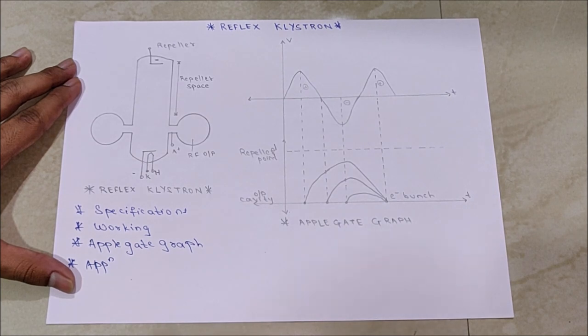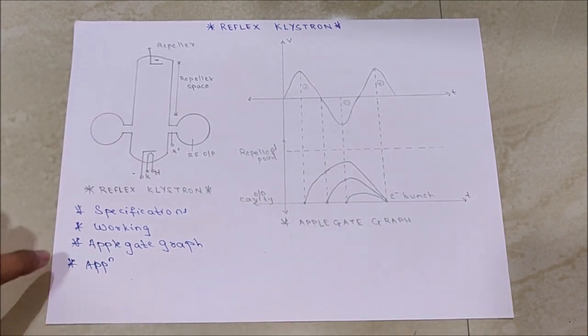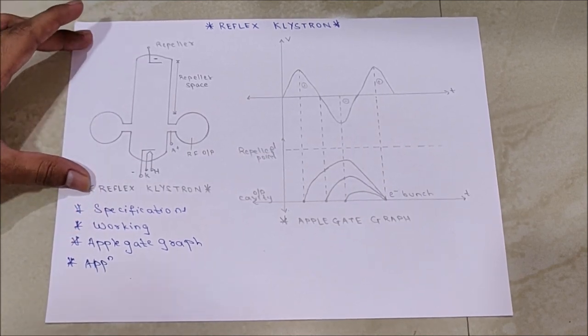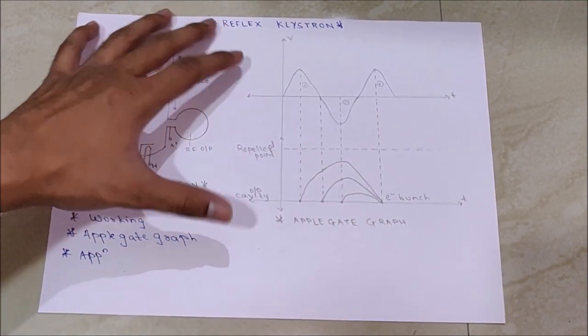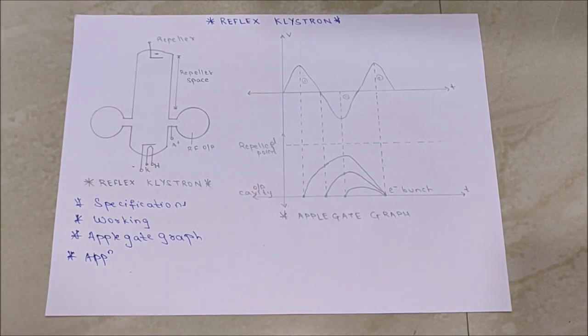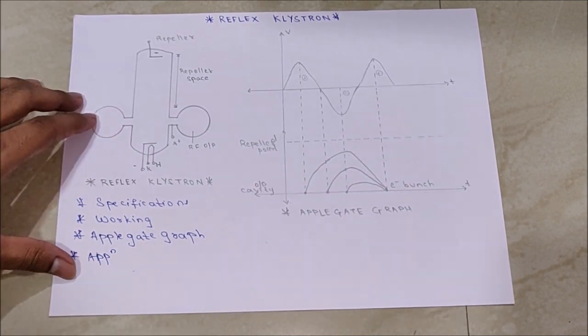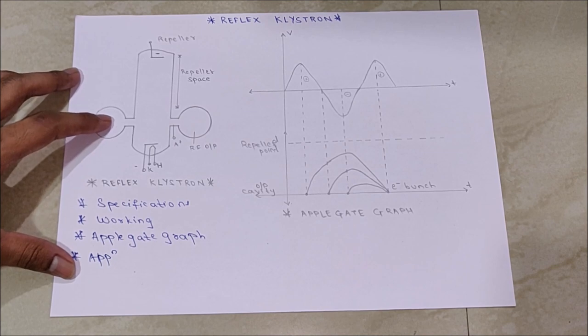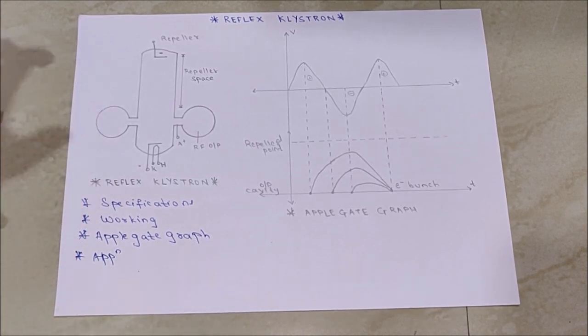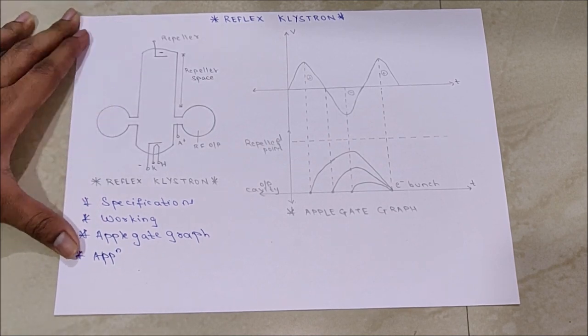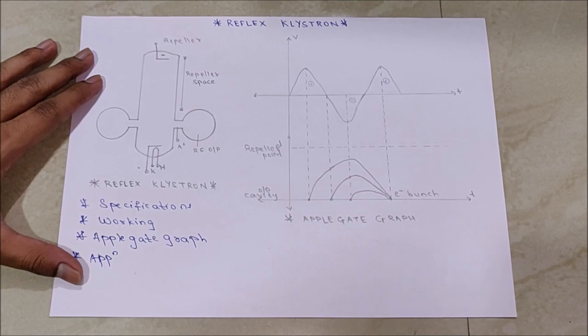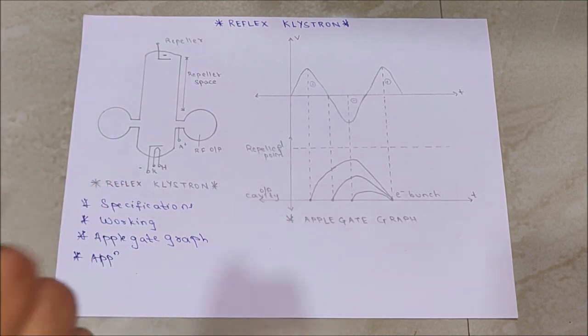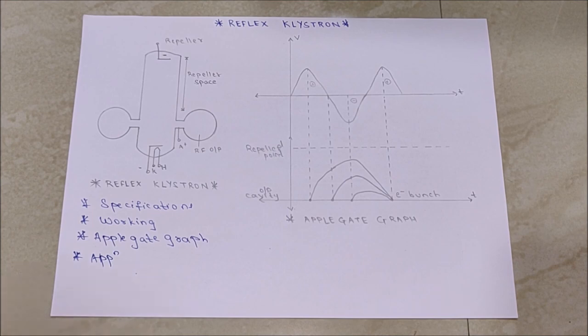This process continues and oscillation is generated for microwave frequency. The specifications and working principle are covered, and the Applegate diagram is explained. Applications include: radar reception, local and pump oscillator, and as a microwave source or portable links. I hope you have understood the topic. If you have any doubts, comment and ask me. Like my video, share it with your friends, and subscribe to my channel. Thank you.